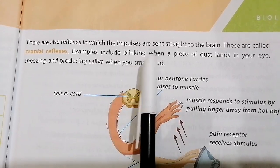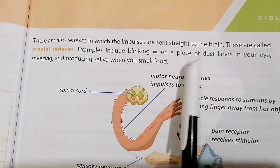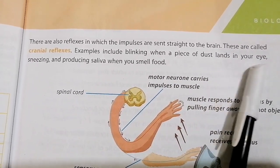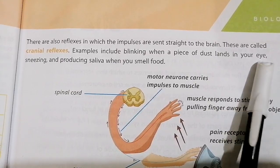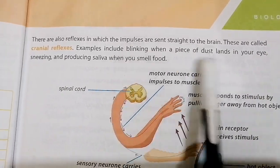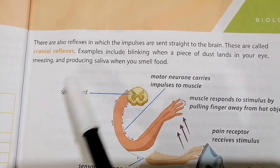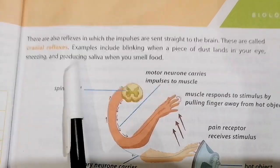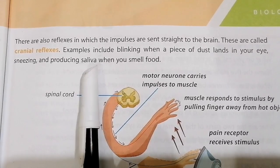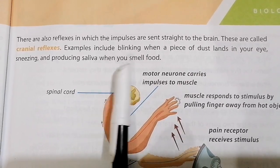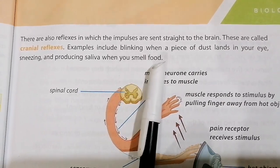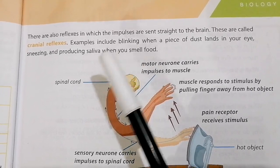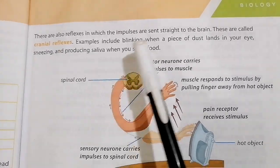Examples of cranial reflexes include blinking when a piece of dust lands in your eye, sneezing, and salivation — when you smell or see food, saliva comes from your mouth.